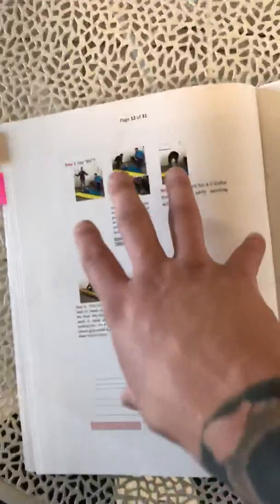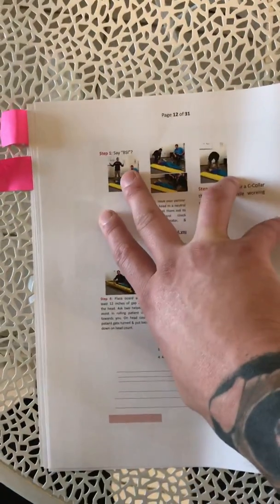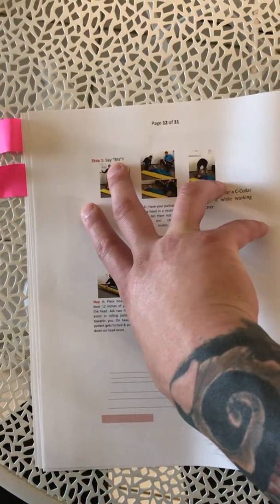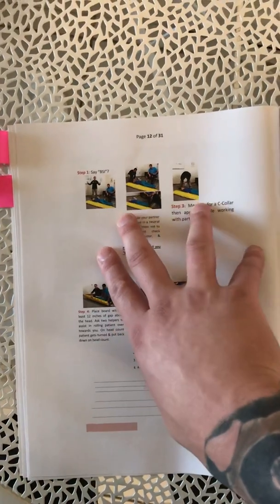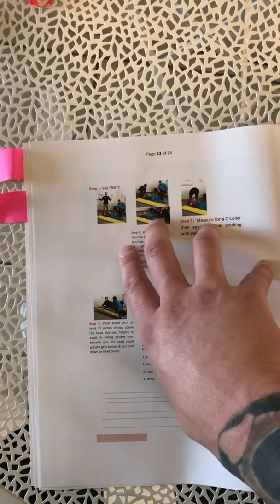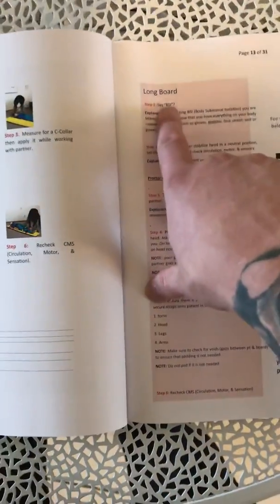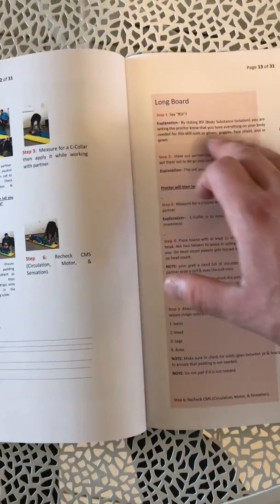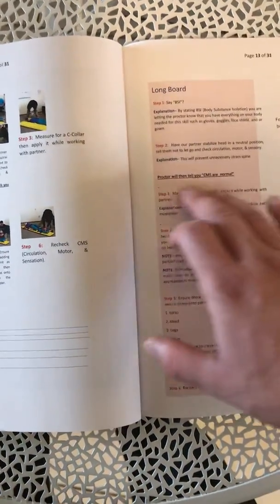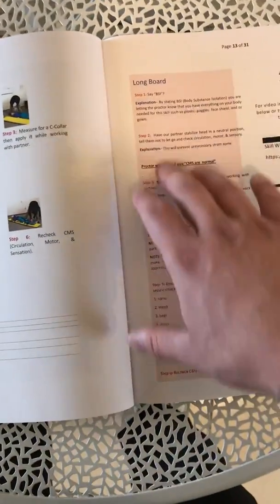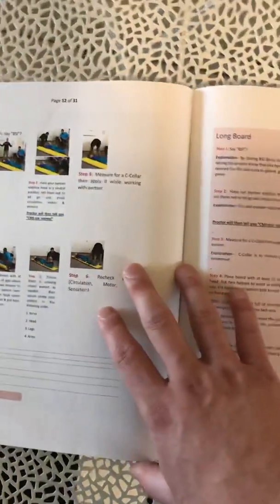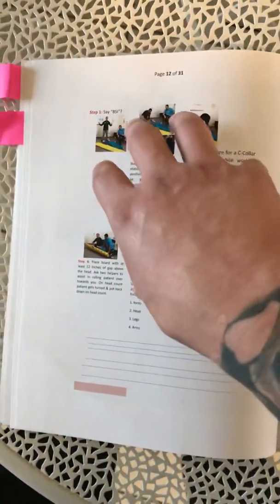On this side you have the visual with the steps. It tells you exactly what to do and shows you what needs to be done. On the other side you have just a linear step-by-step. It's the same thing, just a different format. Everybody learns differently, so that's why I did it this way.